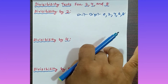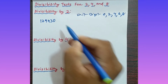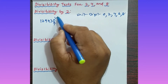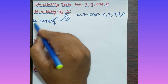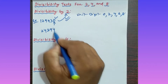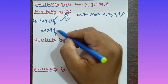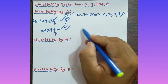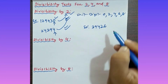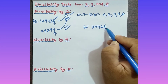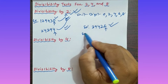For example, take 129430. The last digit is 0, so it is divisible by 2. One more example: 24394 — the last digit is 4, so it is divisible by 2. Another example: 394260 — the last digit is 6, so it is divisible by 2.